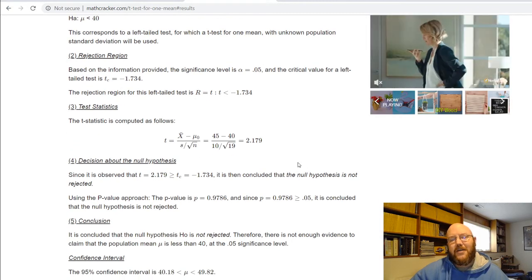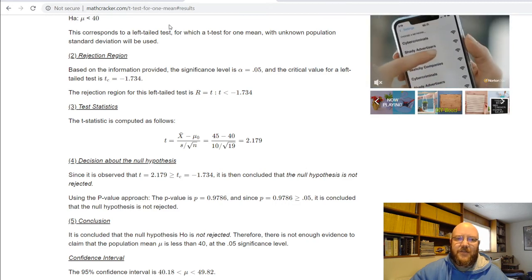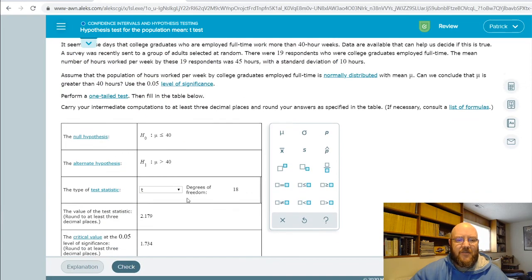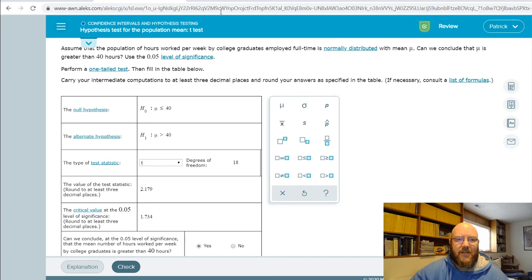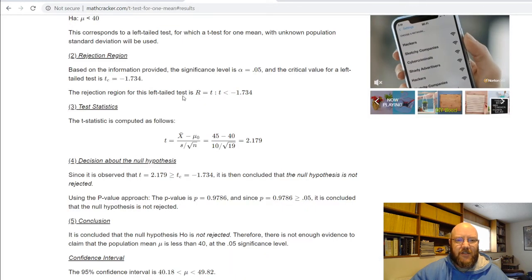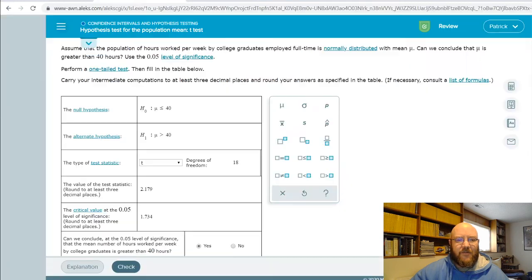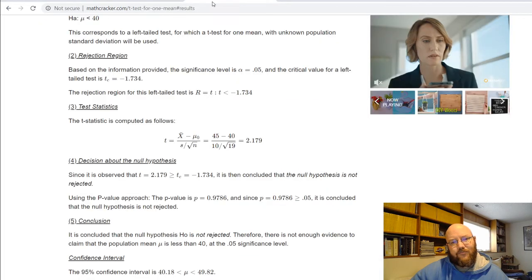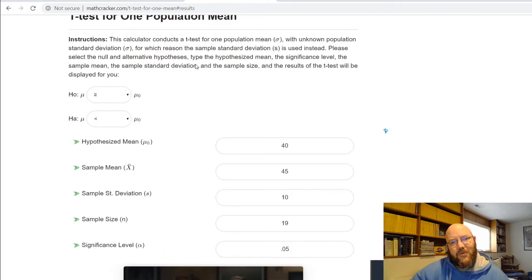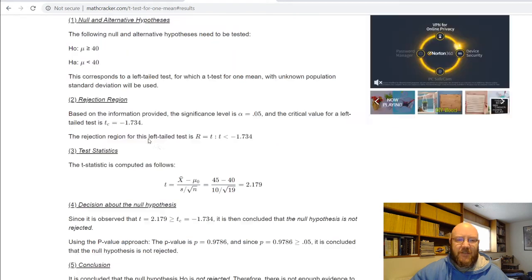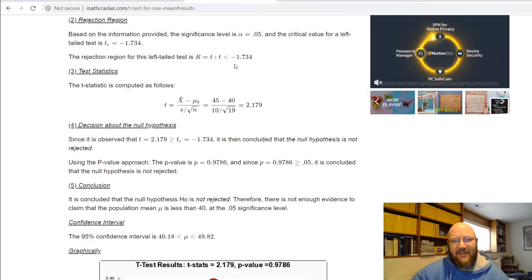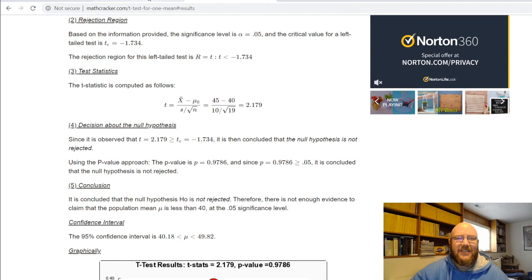So let's just double check your answers while we're at it. So here's our test statistic: 2.179, going back here, yep, 2.179. And our crit value. So, which is negative 1.734, positive 1.734. Did I put these in backwards? I might have put these in backwards. So anyway, that's the only way that would come out that way. So that's okay.